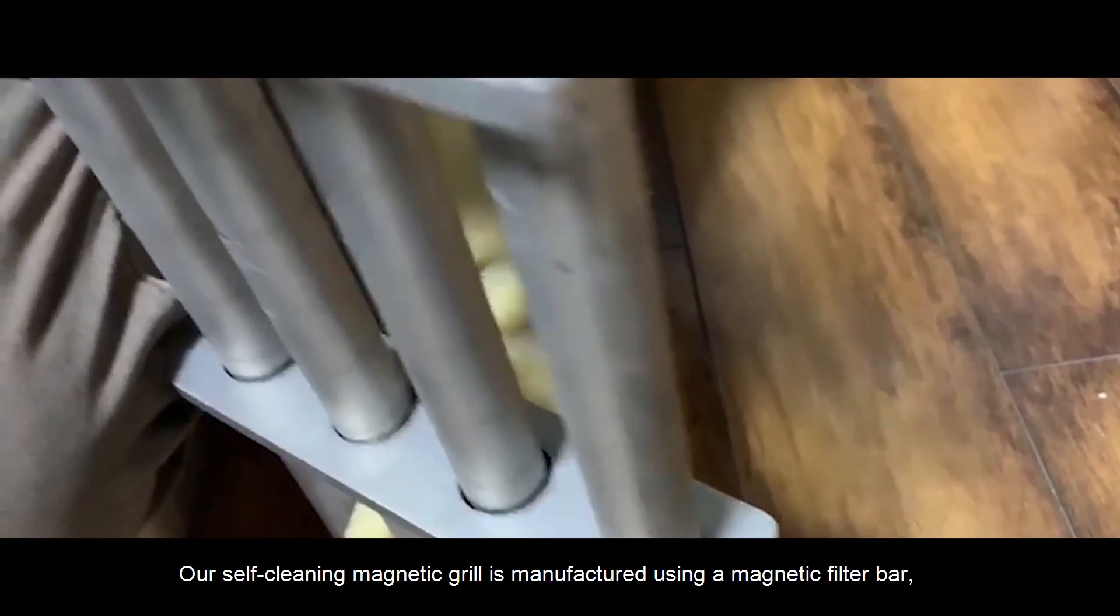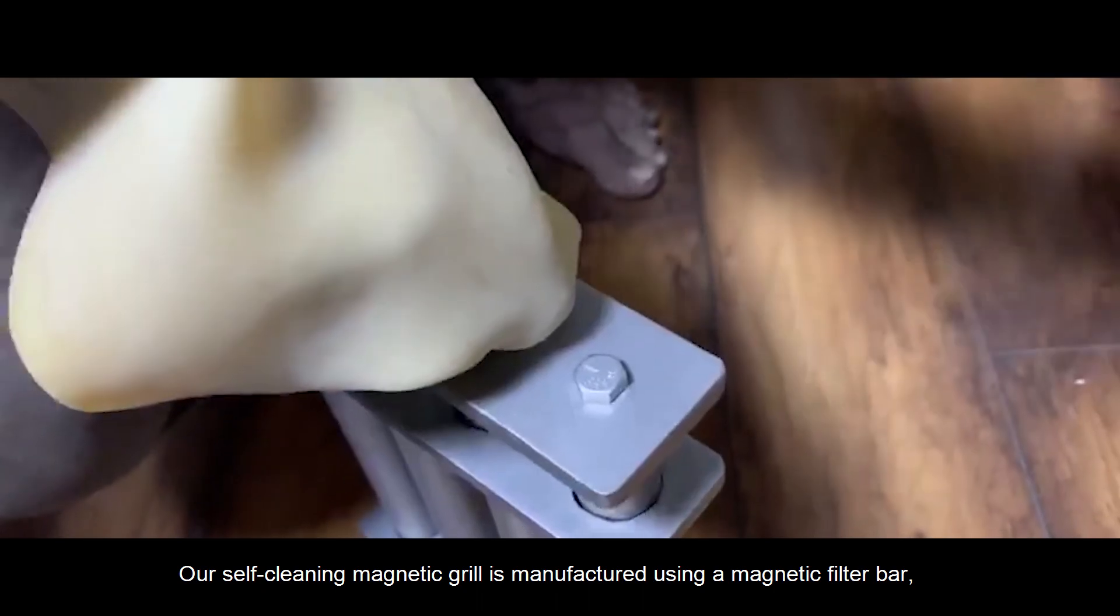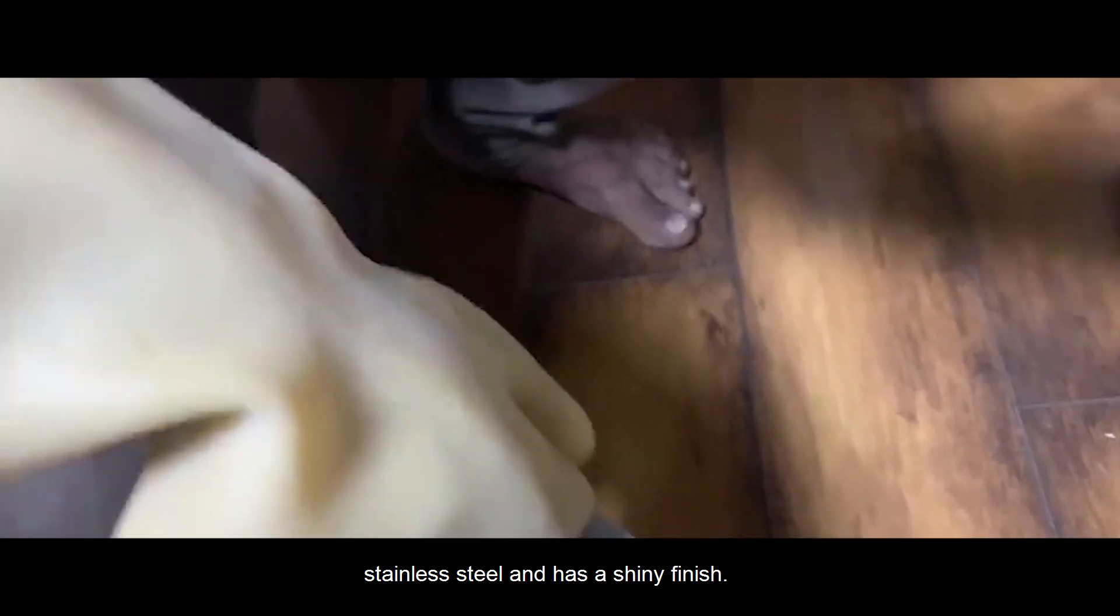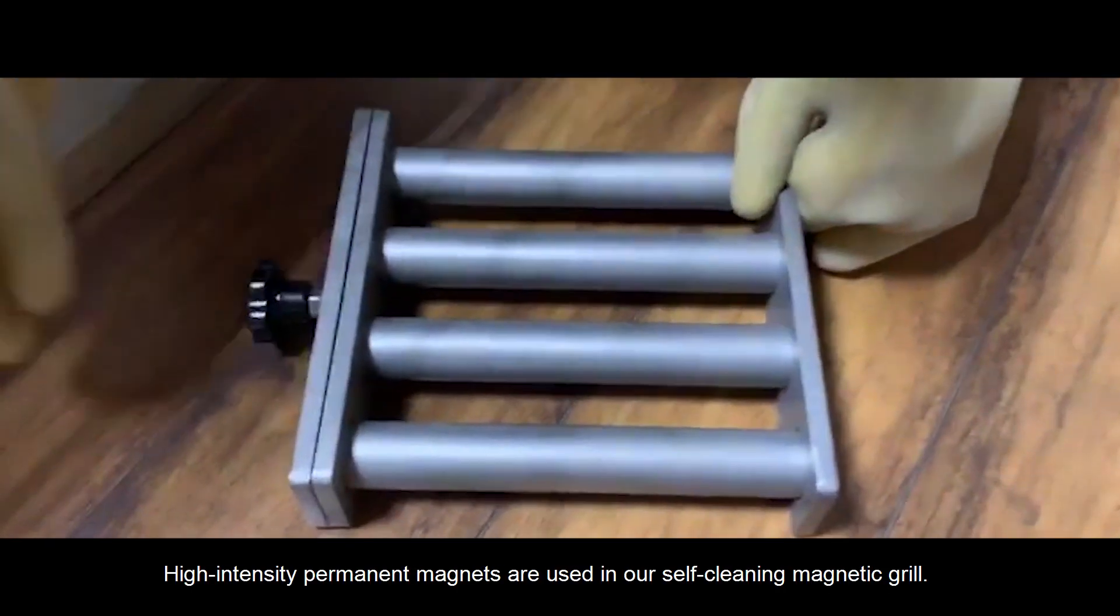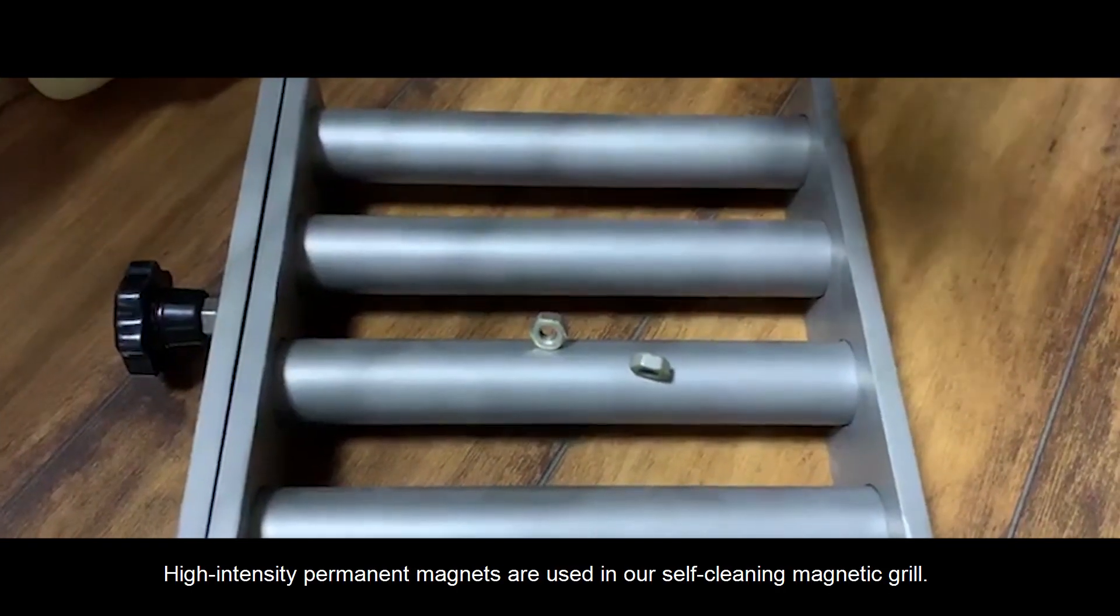Our self-cleaning magnetic grill is manufactured using a magnetic filter bar, stainless steel, and has a shiny finish. High-intensity permanent magnets are used in our self-cleaning magnetic grill.